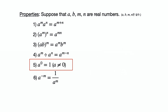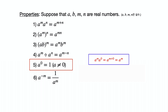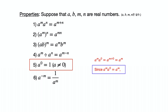Property 5: a to the 0 power is equal to 1. Using property 1 and setting n to 0, we get a to the m power times a to the 0 power equals a to the m plus 0 power, which is just a to the m power. Since a to the m power times a to the 0 power equals a to the m power, a to the 0 power must be 1.